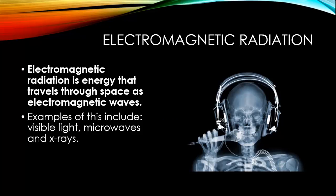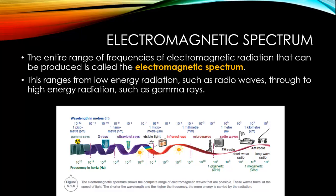Electromagnetic radiation is energy that travels through space as electromagnetic waves. Some examples include visible light, microwaves and x-rays. The entire range of frequencies of electromagnetic radiation that can be produced is called the electromagnetic spectrum. This ranges from low energy radiation such as radio waves through to high energy radiation such as gamma rays. Gamma rays are located on the left hand side of the figure and radio waves on the right hand side.